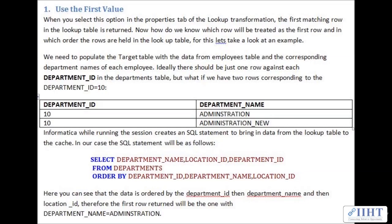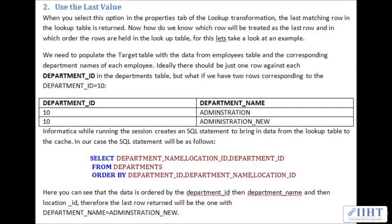Ideally there should be just one row against each department ID in the departments table, but what if we have two rows corresponding to department ID 10 — for example, 'Administration' and 'Administration_New'? Informatica, while running the session, creates an SQL statement to bring data from the lookup table into the cache. The SQL statement will be: SELECT department_name, location_ID, department_ID FROM departments ORDER BY department_ID, then department_name, then location_ID. Therefore, the first row returned will be the one with department name equal to 'Administration'.